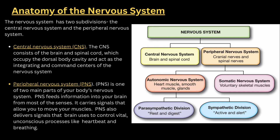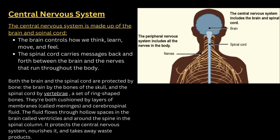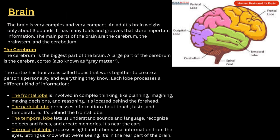The autonomic nervous system controls the heart, smooth muscles, and glands. The somatic nervous system controls voluntary skeletal muscle. The brain controls thinking, learning, movement, and feeling. The spinal cord carries messages back and forth between the brain and the nerves that run throughout the body. Both the brain and spinal cord are protected by bone — the brain by the skull and the spinal cord by the vertebrae, which is a ring-shaped structure.